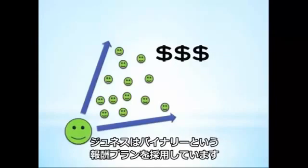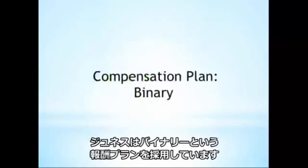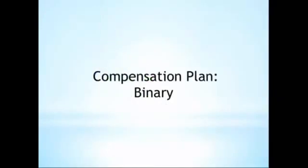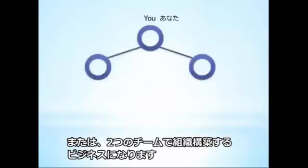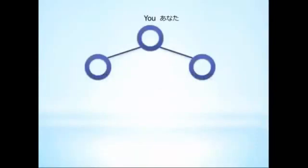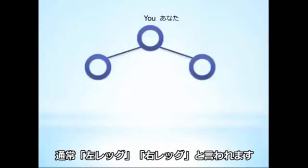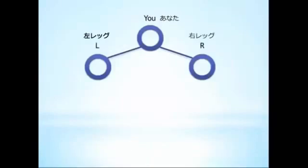Jeunesse uses what's called a binary structure when calculating commissions. It's called a binary because each position in the organization has two legs or teams. For simplicity, these legs are commonly referred to as left and right.